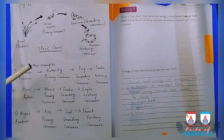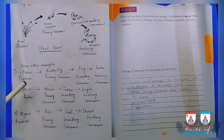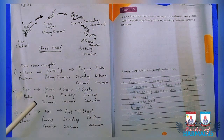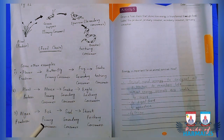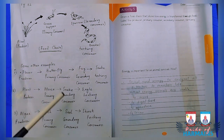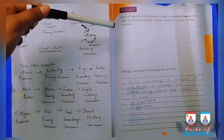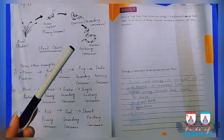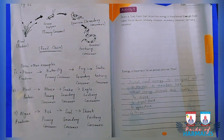So the example is: plant → grasshopper → sparrow → snake. You can also take other examples like flower → butterfly → frog → snake, or plant → mouse → snake → eagle, or algae → fish → shark. You are going to take any one of these examples and draw it in the given space.